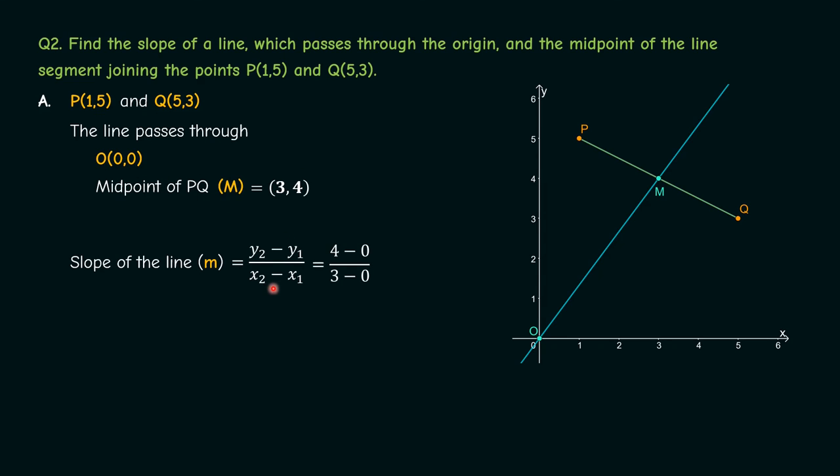By substituting these values into this formula, we get m = (4 - 0)/(3 - 0). Therefore m = 4/3. Therefore the slope of the line is 4/3.